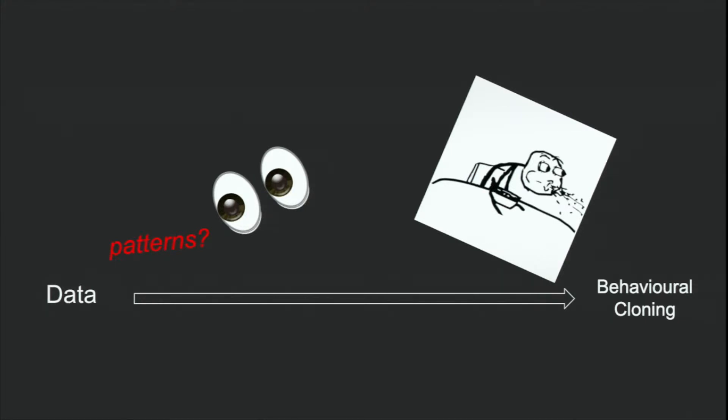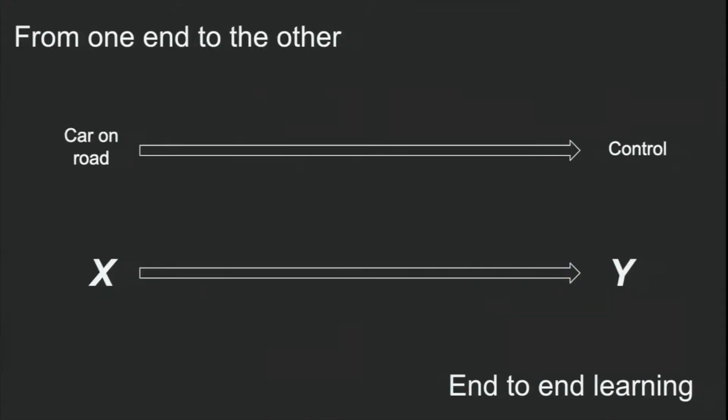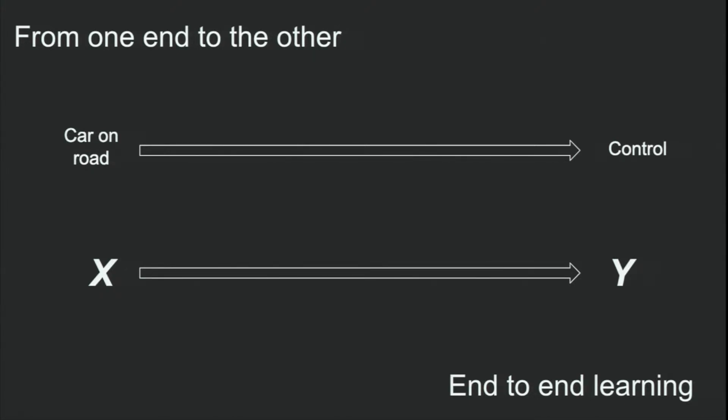So essentially how this works is we start with having a car on the road, that's our input, and our output is control. Car on the road is how you get your data, and the control is what actually happens to the car. So you go from X, which is your input, to your Y. Now pretty basic, but this is actually quite substantial.